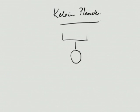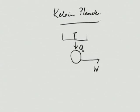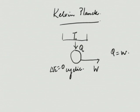Basically this deals with some cyclic device which executes a cycle — by itself it is not changing its energy. So it takes Q from some heat reservoir at some temperature T₁. Since this cyclic device is undergoing a cycle, it is not changing its state, so delta E is 0, meaning Q equals W. The Kelvin-Planck statement says that this is not possible.